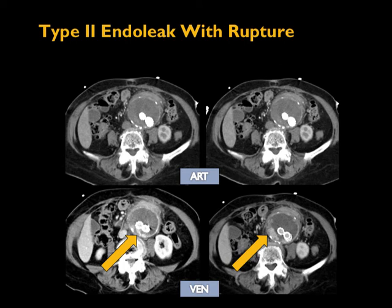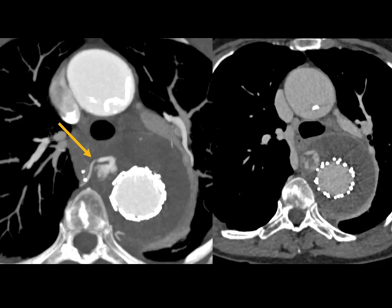The venous phase must be part of your standard post-stent protocol, and you must always look very carefully for these endoleaks. Here's a really nice example of an intercostal artery endoleak — a small intercostal artery branch going to the aortic aneurysm sac on the left image, with an amorphous blob of contrast on the arterial phase on the left and a larger blob on the venous phase on the right. This puts the patient at risk for further aneurysm progression and rupture.